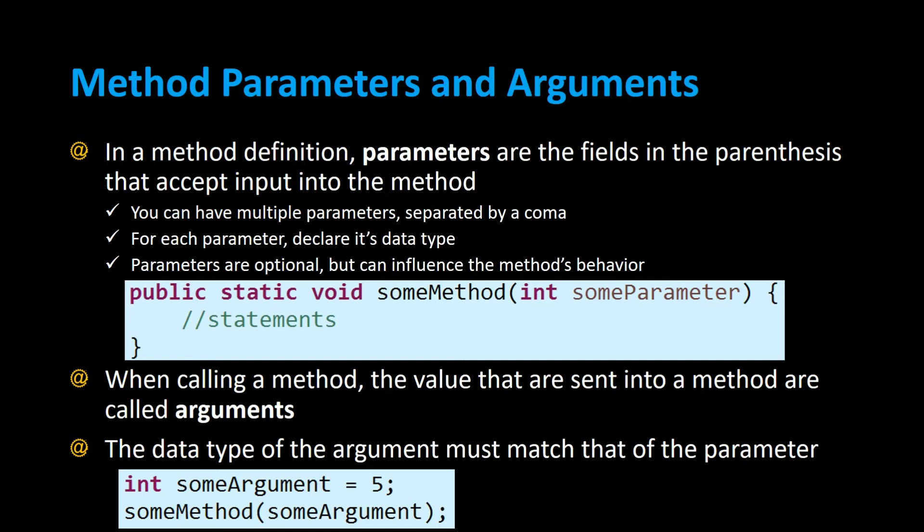In this example we have a method called some method that takes an integer parameter called some parameter. When calling a method, the values that are sent into the method are called arguments, and the data type of the argument must match that of the parameter.